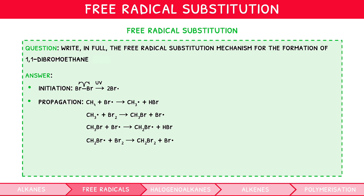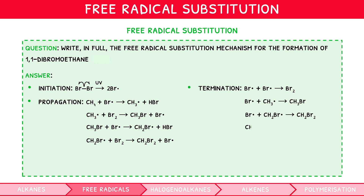We would then write termination showing all the possible combinations of radicals: Br + Br, Br + CH3, Br + CH2Br, CH3 + CH3, CH3 + CH2Br, and CH2Br + CH2Br.